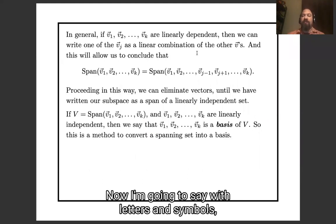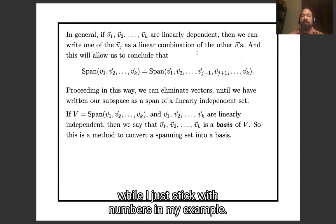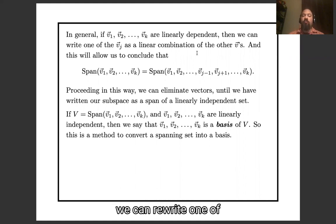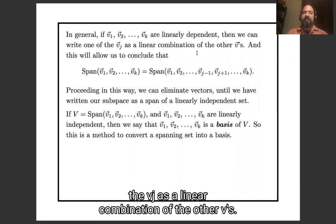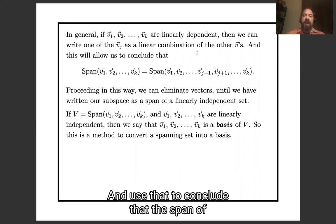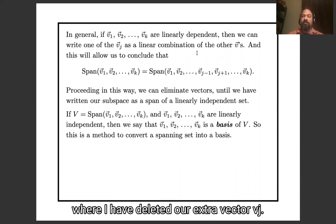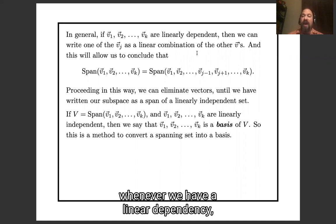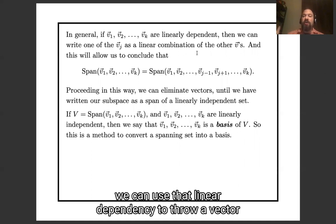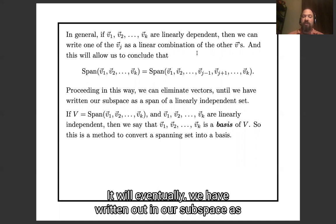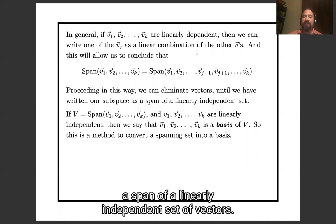Now in letters and symbols: whenever we have a linear dependency, we can rewrite one of the vj's as a linear combination of the other v's, and use that to conclude that the span of the whole big list of v's is the same as the span of the list where we have deleted that extra vector vj. Proceeding this way, whenever we have a linear dependency we can throw a vector out of the list while keeping the span the same, until eventually we will have written our subspace as the span of a linearly independent set of vectors.